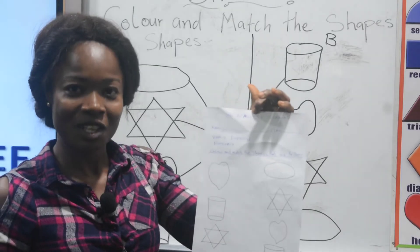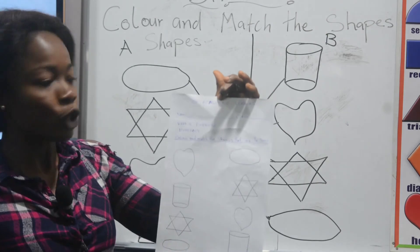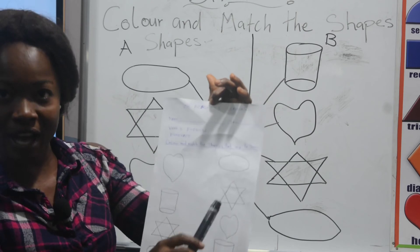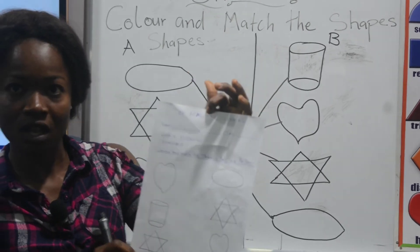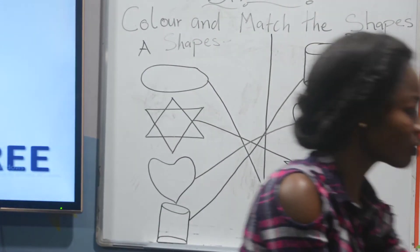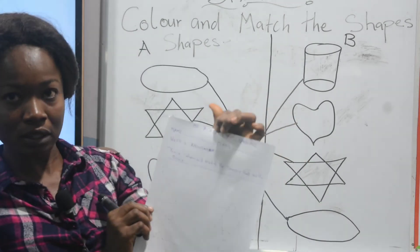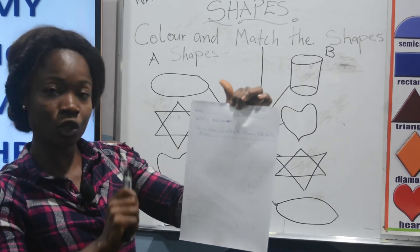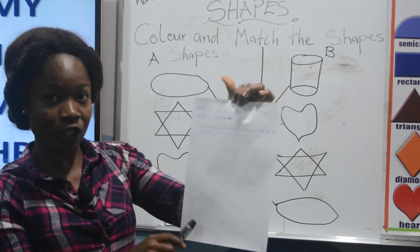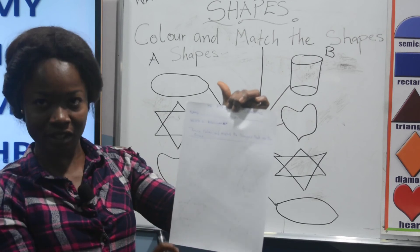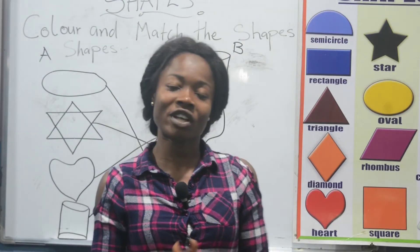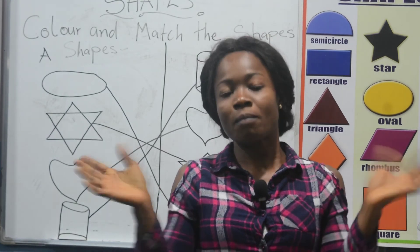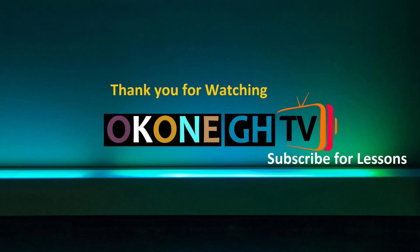Very good. Parents, please guide your children to first color the shapes, and after that they will match them. This is the exercise. For the assignment, guide them to trace using a pencil, then use crayon to color the shapes, then match them. Thank you. This brings us to the end of today's lesson. Take very good care of yourself. Bye bye!